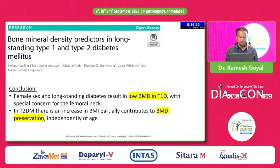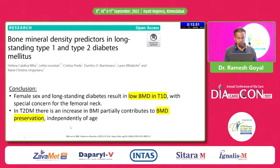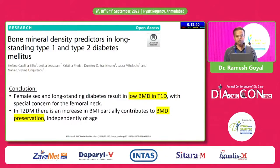Data on BMD predictors in long-standing type 1 and type 2 diabetes shows that female sex and long-standing diabetes result in low BMD in type 1 diabetes, with special concern for femoral neck. For type 2 diabetes, increased BMI partially contributes to BMD preservation, independent of age. Increased BMI can be protective for fracture risk, though it may be detrimental for vascular and metabolic complications.